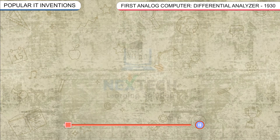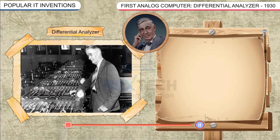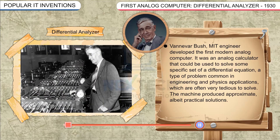First Analog Computer — Differential Analyzer, 1930: Vannevar Bush, an MIT engineer, developed the first modern analog computer. It was an analog calculator that could be used to solve a specific set of differential equations, a type of problem common in engineering and physics applications, which are often very tedious to solve. The machine produced approximate, albeit practical solutions.